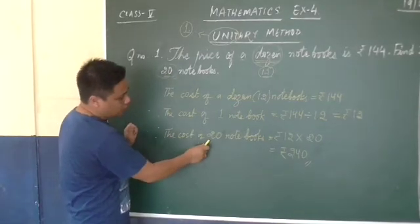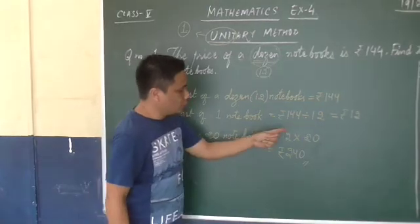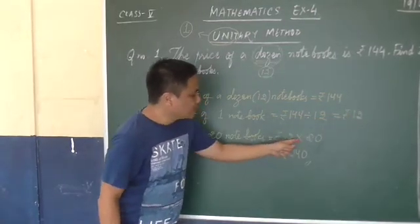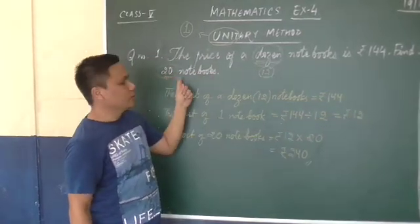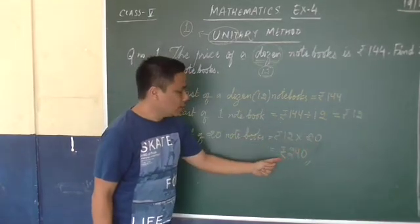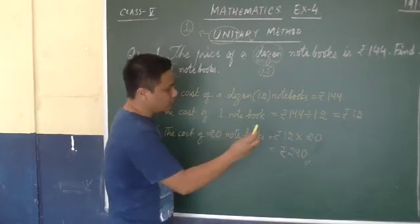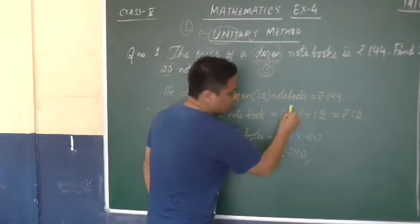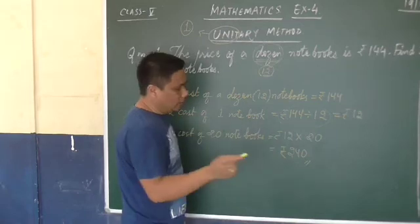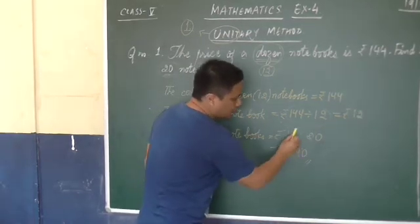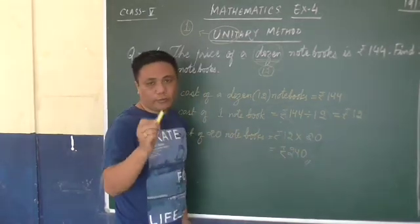The cost of 20 notebooks is equals to this 12 gets multiplied by the number of notebooks that is required. It goes to 240. So two simple things. First, division. Then, multiplication. Division followed by multiplication.